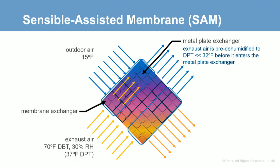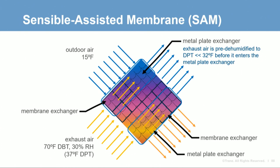Recall that the SAM exchanger uses a combination of membrane and metal plate exchangers. On the left-hand edge where the coldest outdoor air enters, the exhaust air passes through the membrane first, dehumidifying it below the 32-degree frost point before it enters the metal plate in the cold corner — removing the risk of liquid condensate turning to ice. At the far right-hand corner, icing conditions are also reduced because the exhaust air passes through a plate exchanger first where it is pre-cooled, increasing relative humidity and thus increasing the latent effectiveness of the membrane.